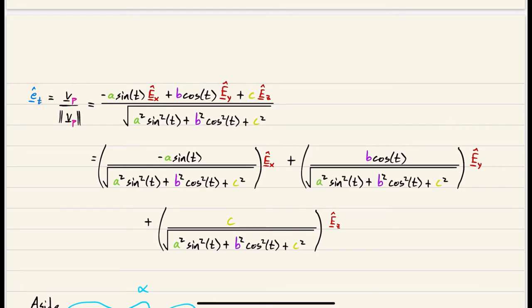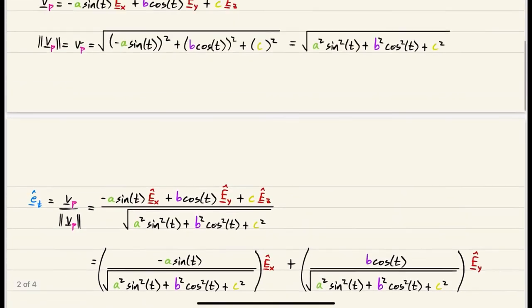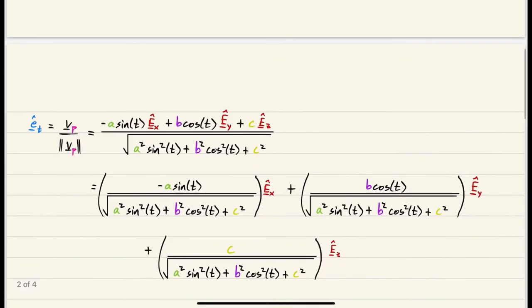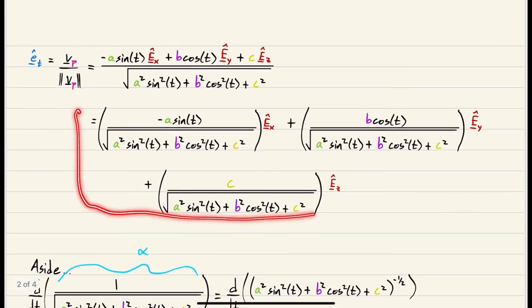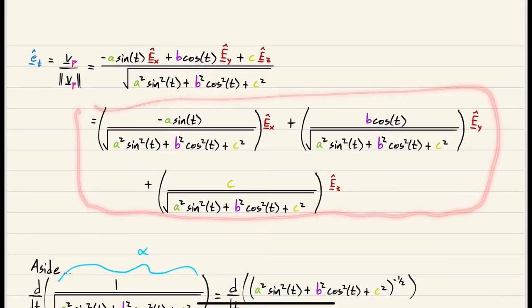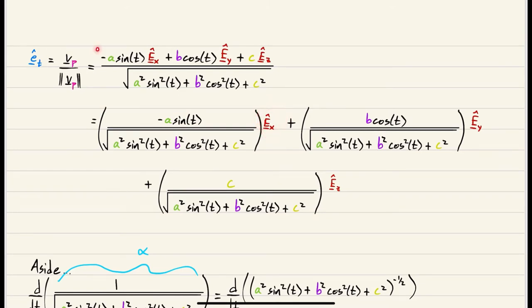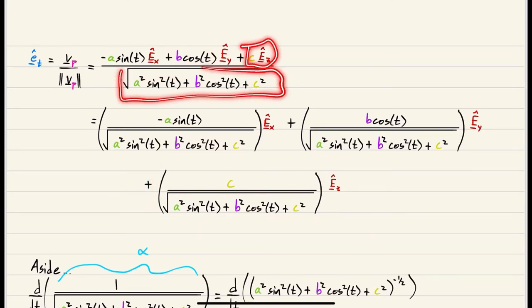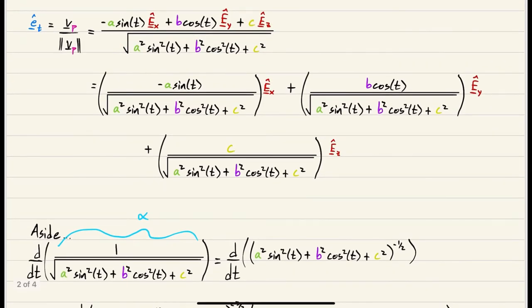Recall that our tangent vector e_t is defined as the velocity vector divided by the speed. We already found the velocity vector, and we're just dividing it by our speed. That's our tangent vector. I split it into each component: the e_x component is (−a·sine t) over speed, the e_y component is (b·cosine t) over speed, and the e_z component is c over speed.